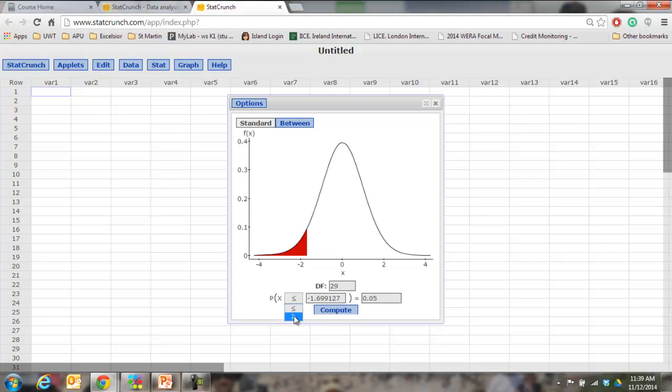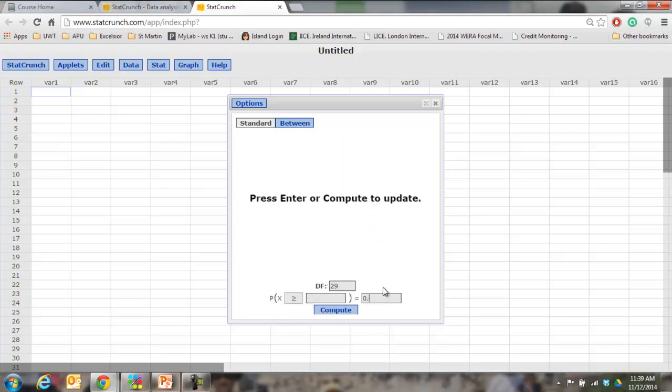Okay? If it was a greater than, an upper tail test, it's the same idea. And of course we all know that because it's symmetrical it's going to be the same number but positive. However,